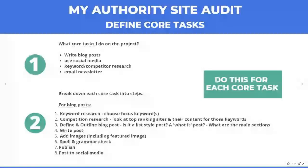Continuing with the writing workflow: write the post, add images, do a spelling and grammar edit check, publish the post, then post links to social media. I would do that for each of the core tasks. For 'use social media' I'd break that down further — what do I publish on the other days, where do I get images? Same thing with keyword research and email newsletter. Anything that's kind of a main task of the project you're working on.